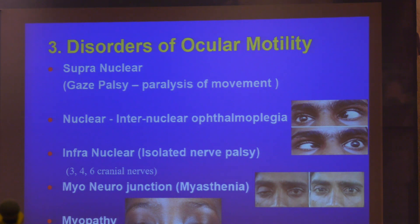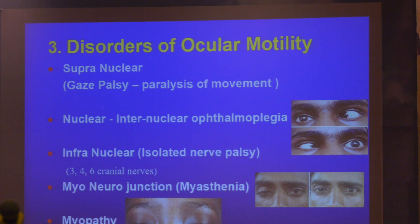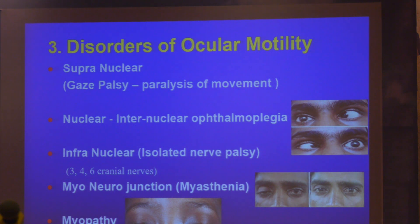Coming to oculomotility: supranuclear, nuclear, internuclear, myoneural junction, and muscle. Supranuclear — no diplopia, because it's a movement problem, not a muscle problem. Infranuclear — it's an isolated nerve palsy; diplopia is the predominant symptom. Myoneural junction — bilateral, symmetrical, no diplopia. If you know how to diagnose all these things, there is no other motility problem apart from these six points.